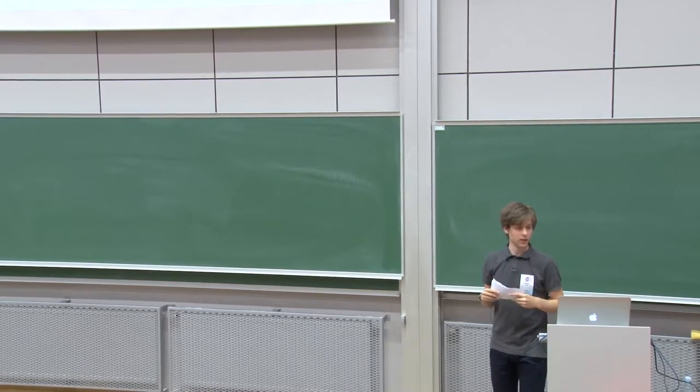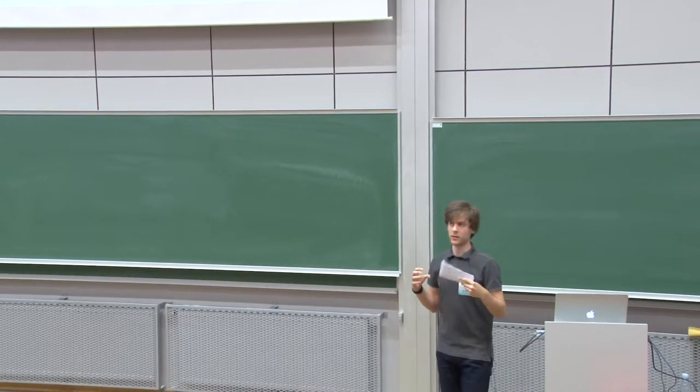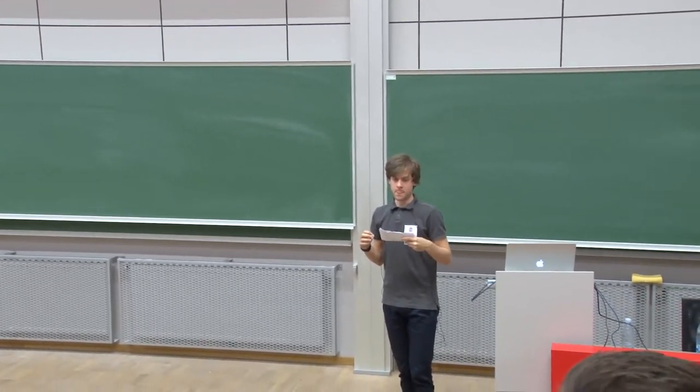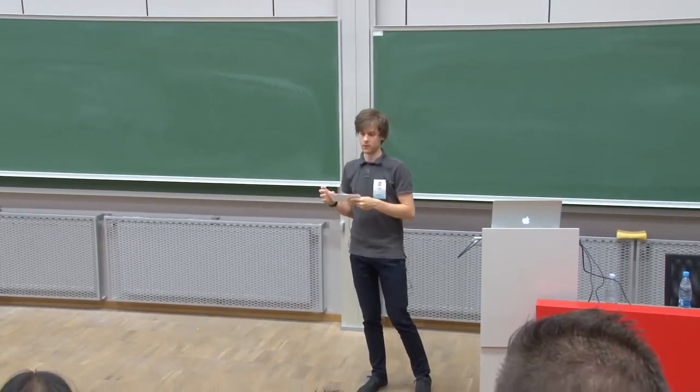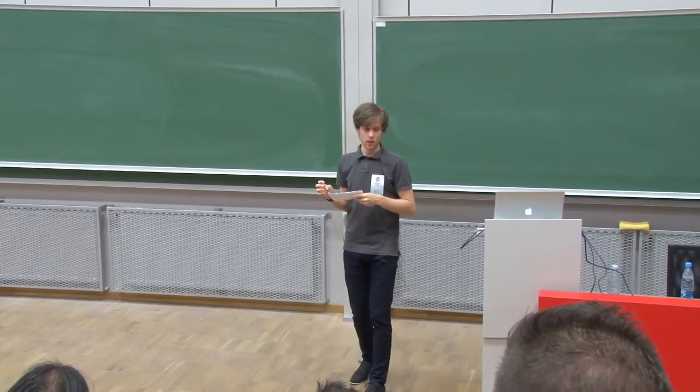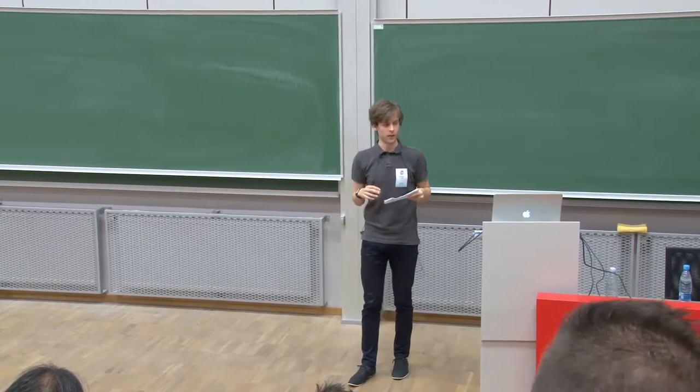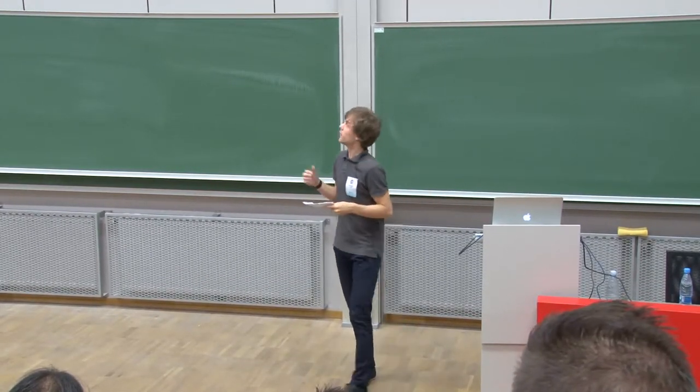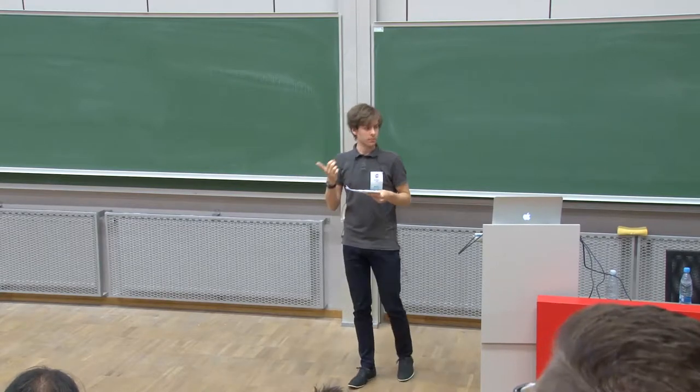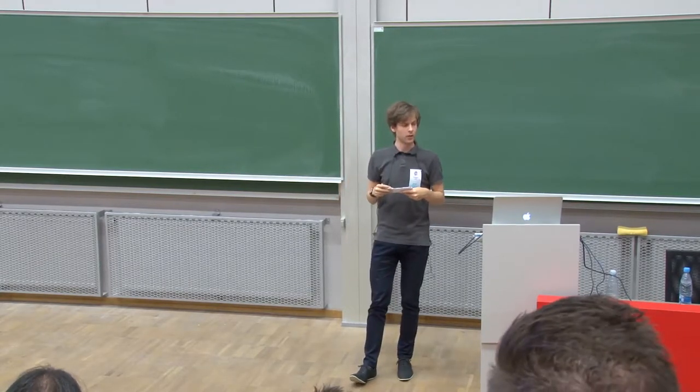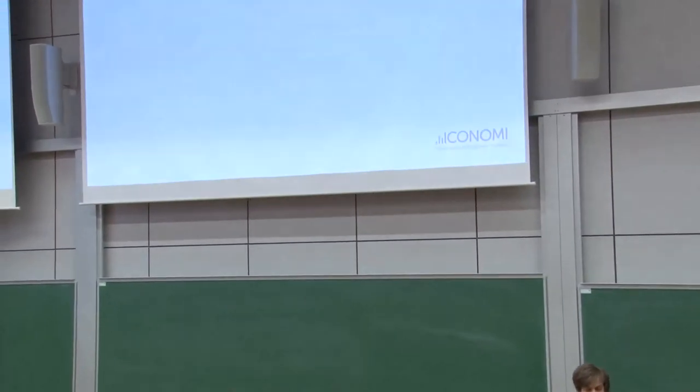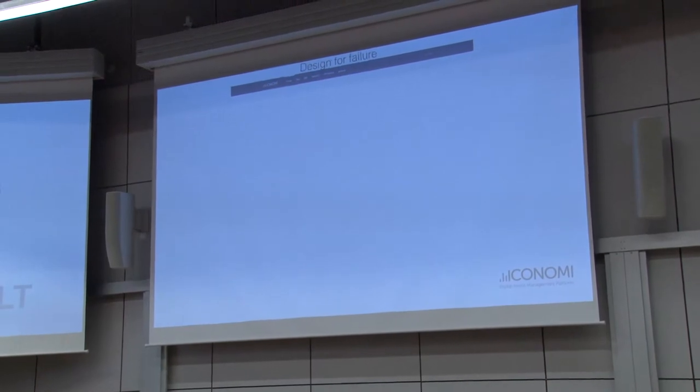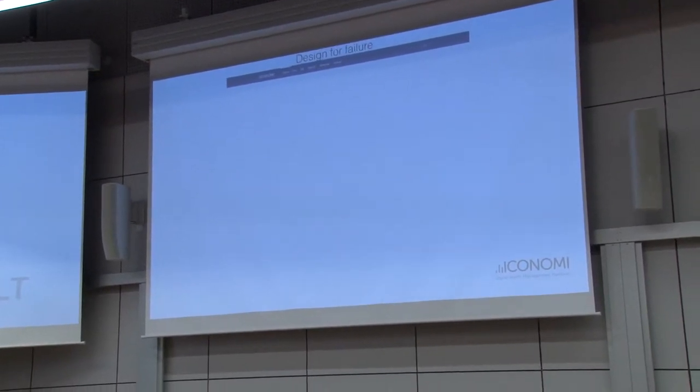When we are scaling, we have a lot of these new services. And when a simple service is offline, if we would not design for failure, that would mean that we would get something like this, a broken page. With monoliths, failure is simple. The system is either up or it's down. But with the microservices, this is more complex.